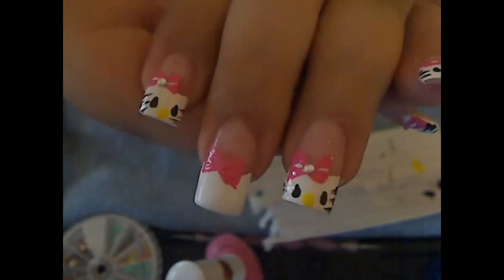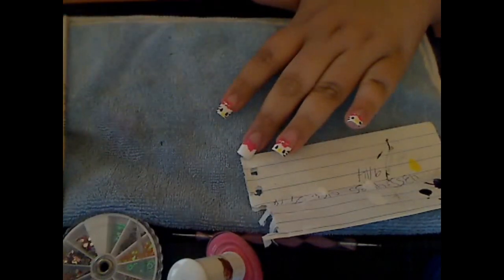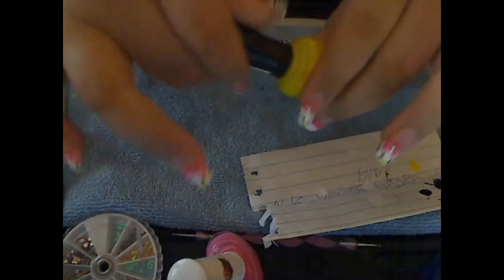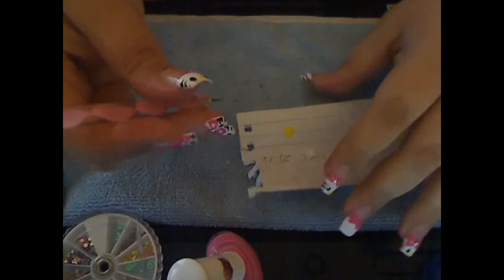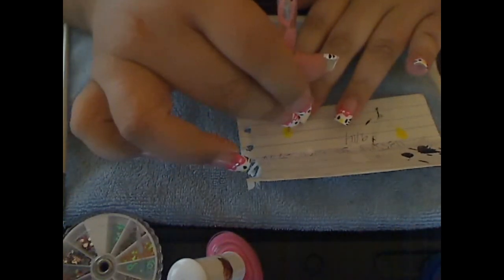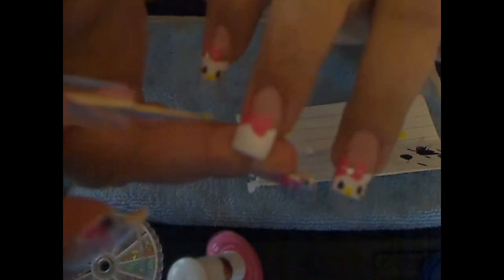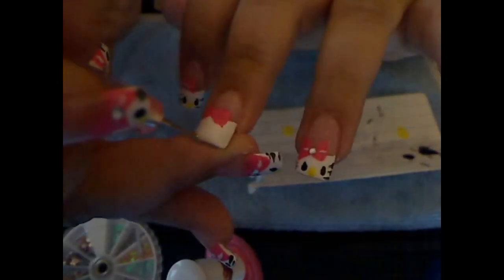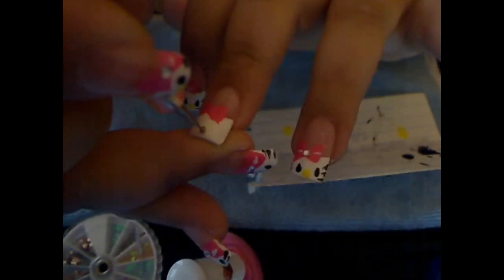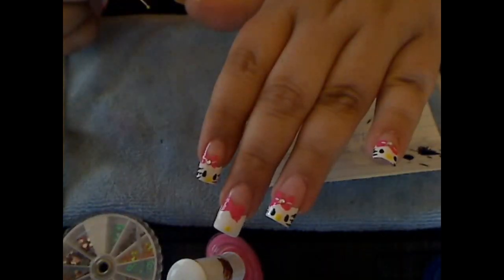Now we are going to go ahead and do the little nose. You are going to use yellow and again we are going to blob. I am using a dotting tool and we are going to do the little nose. Just try to do it near the end of the nail.